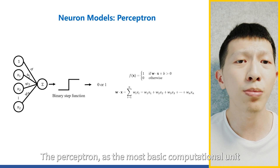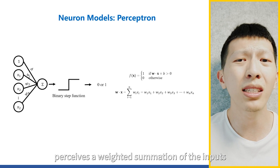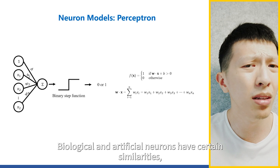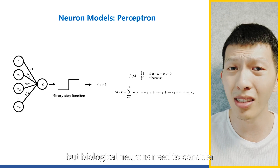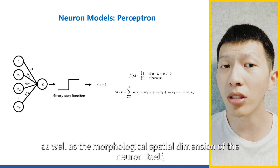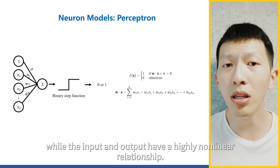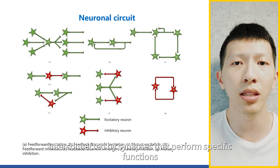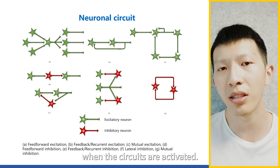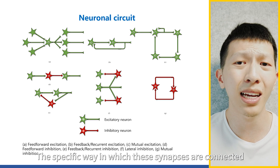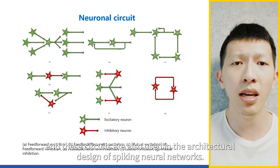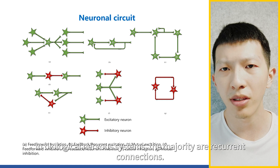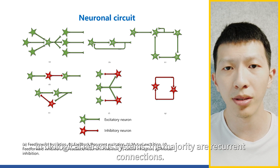The perceptron is the most basic computational unit in the artificial neural network, performing a weighted summation of the input and then generating outputs through an activation function. Biological and artificial neurons have certain similarities, but biological neurons must consider the temporal dimension of information, as well as the morphological summation dimension of the neuron itself, while the input and output have a highly nonlinear relationship. Neural circuits are neuron populations interconnected by synapses that perform specific functions. In biological neural systems, the majority of connections are recurrent connections.